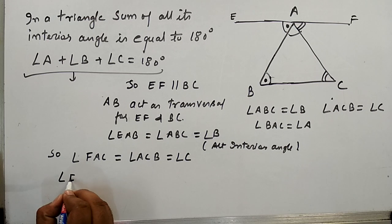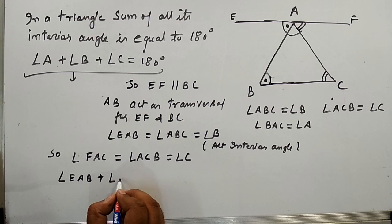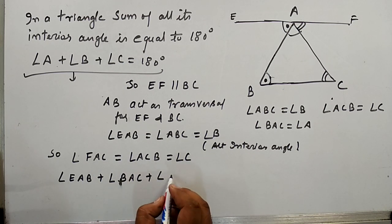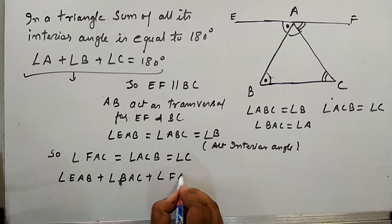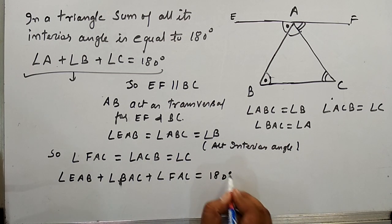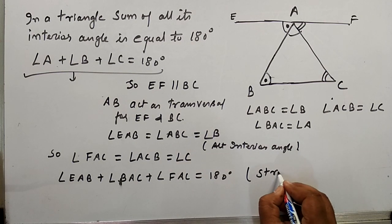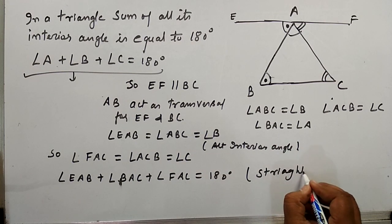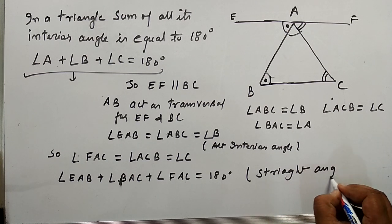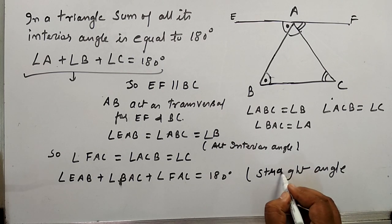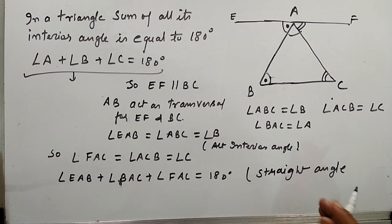And in this figure we can clearly see that angle EAB plus angle BAC plus angle FAC is equals to 180 degrees. That is equals to a straight angle.